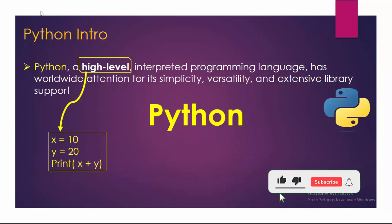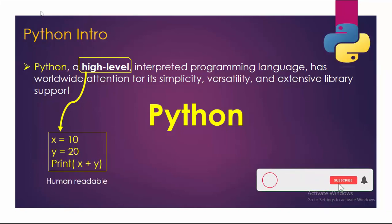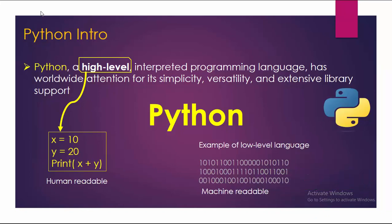So Python is high level. Take an example: x = 10, y = 20, print(x + y). This is Python source code which is very human readable. On the other hand, we have an example of low level language which is 101010, which is called machine readable and is in zeros and ones only.